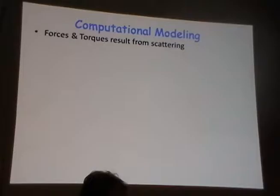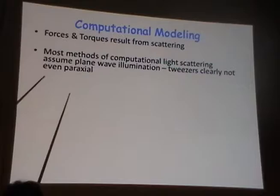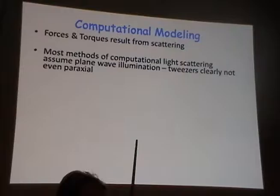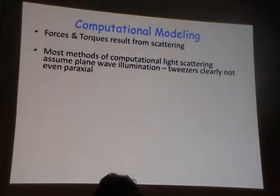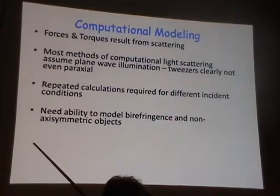Computational modeling enables us to determine forces and torques resulting from scattering. Most methods of computational light scattering assume plane-wave illumination, and clearly tweezers do not have plane-wave illumination. Everything I was showing yesterday assumed the paraxial approximation — beams very close to the optical axis — however in tweezers that is not the case. I am doing repeated calculations for different incident conditions, and the ability to model birefringence in non-axisymmetric objects is important because very soon I will show what happens when we trap birefringent particles.